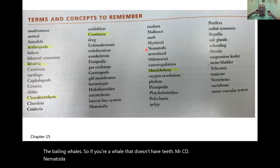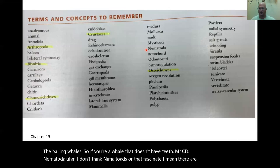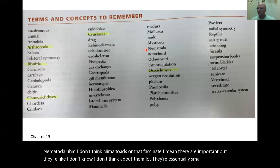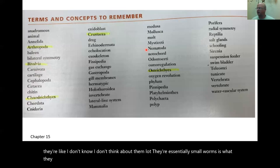Nematoda — nematodes are essentially small worms. They're a type of annelid. They're important but not the most fascinating group.